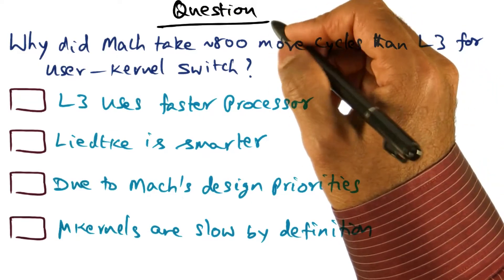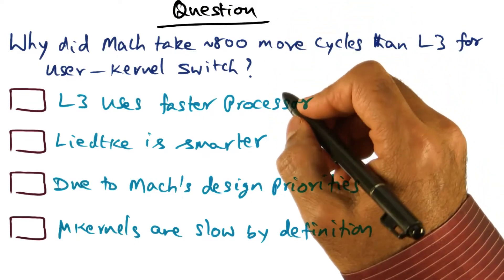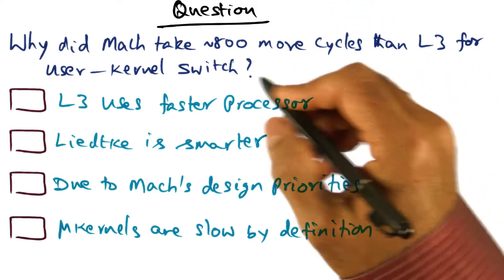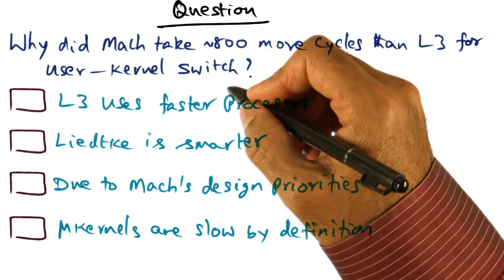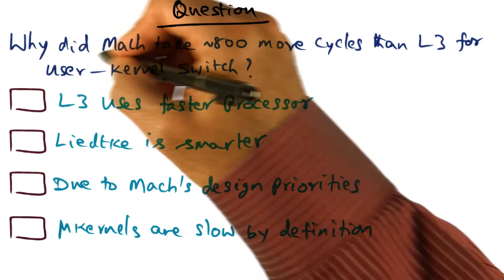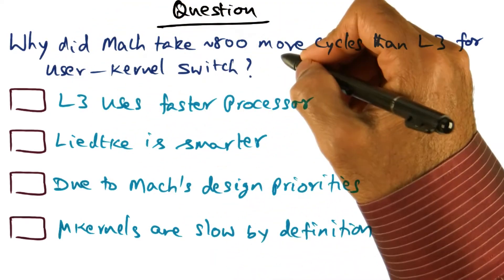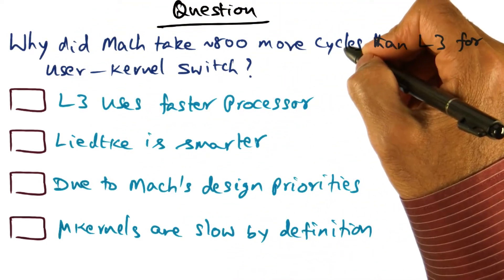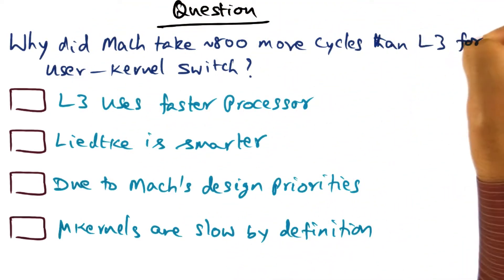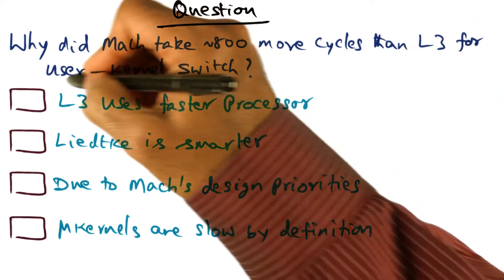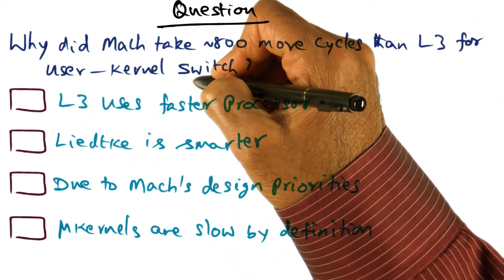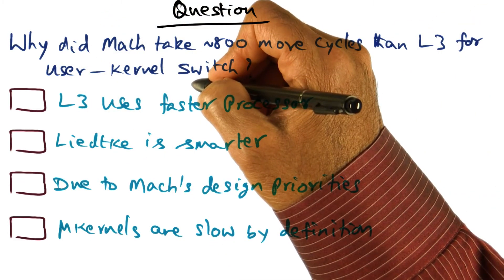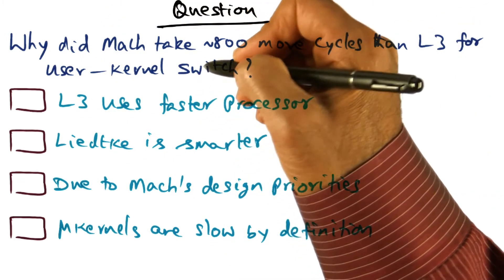This is a good time to bring up a quiz for you. This question is asking you: why did Mach take roughly 800 or more cycles than L3 microkernel for doing this border crossing between user and kernel?